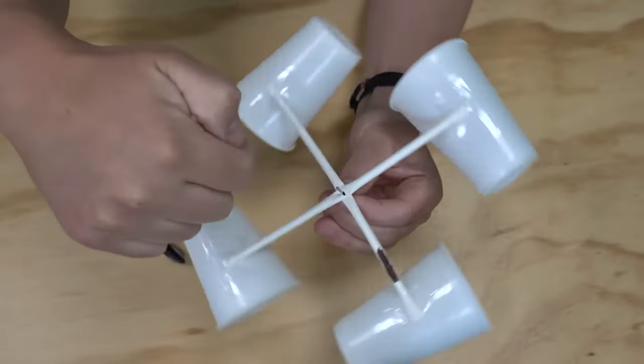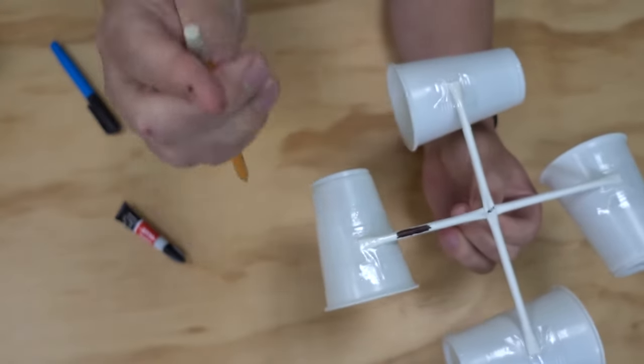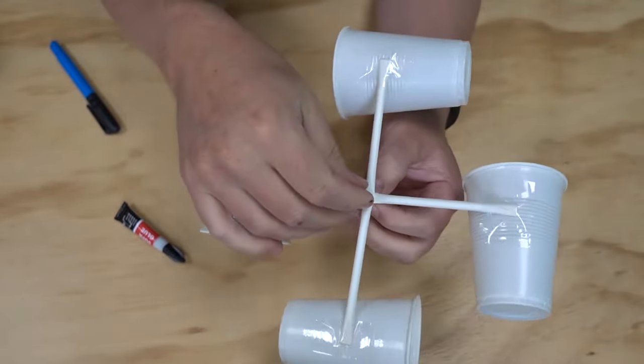You'll know that you've got it right when you can hold the pin at the bottom and the straws spin freely. Next we grab our pencil with the eraser on the end and we're going to insert the pin into the eraser.